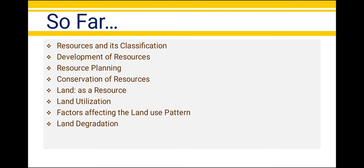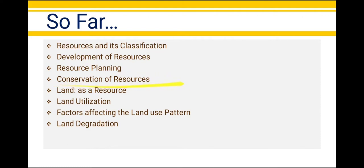Then we saw resource planning, and before that we learned about the development of resources — why it is important, because it can create various problems for future generations. Then came the concept of sustainable development. To use resources at their best, we need to plan, conserve, and use these resources judiciously. Then we learned about land as a resource — why land is such an important resource, the land utilization patterns, factors affecting land use, land degradation, and conservation measures.